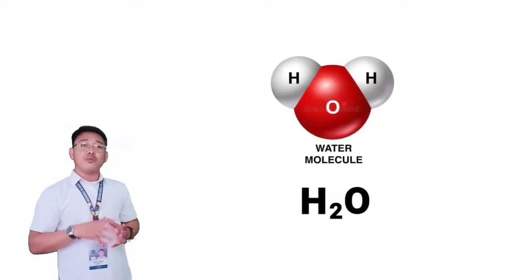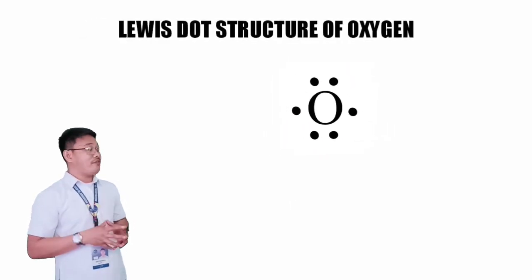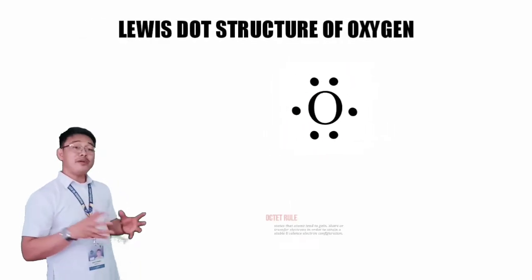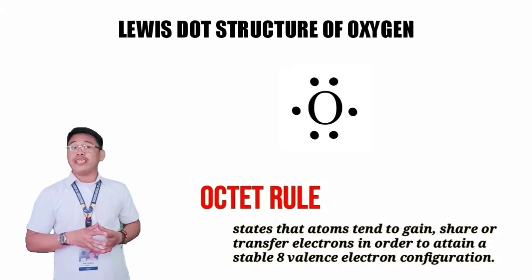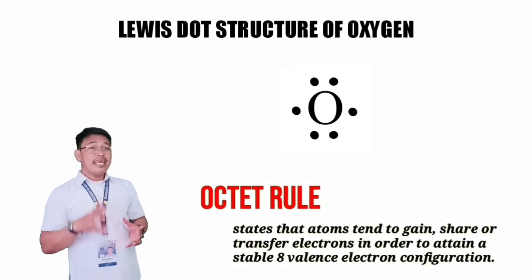Using the Lewis dot structure, we can show chemical bonding more easily. Let's use water H2O as an example. Now, let's have oxygen first.